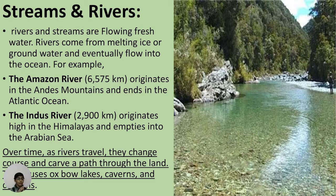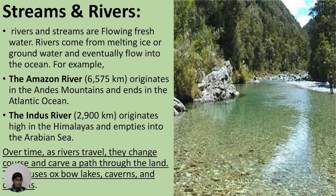Streams and rivers: Rivers and streams are flowing freshwater. Rivers come from melting ice and groundwater, and eventually flow into the ocean. The Amazon River, at 6,575 kilometers, originates in the Andes Mountains and ends in the South Atlantic Ocean. The Indus River, at 2,900 kilometers, originates high in the Himalayas and empties into the Arabian Sea.